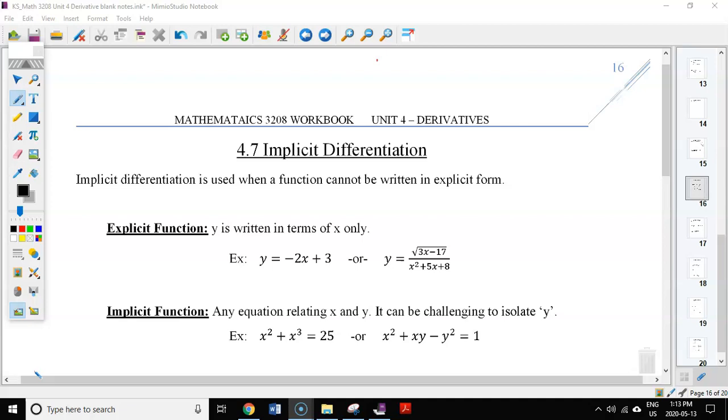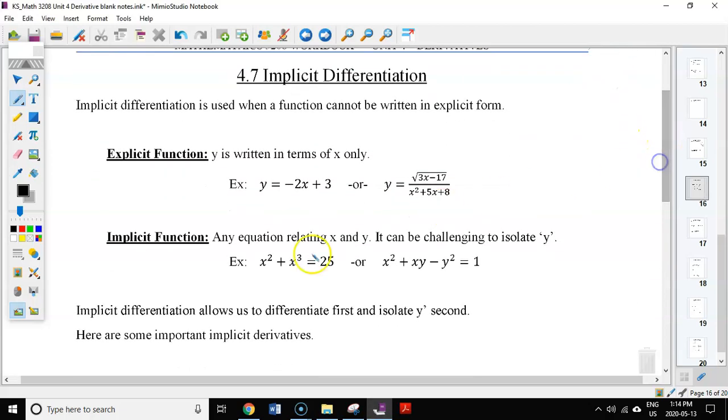And before we can do that, what we need to define is the difference between an explicit function and an implicit function. So historically, most of the equations and functions we've dealt with have already isolated y. So in the first one, you look here, y equals negative 2x. So your standard y equals mx plus b, it's the equation of a line.